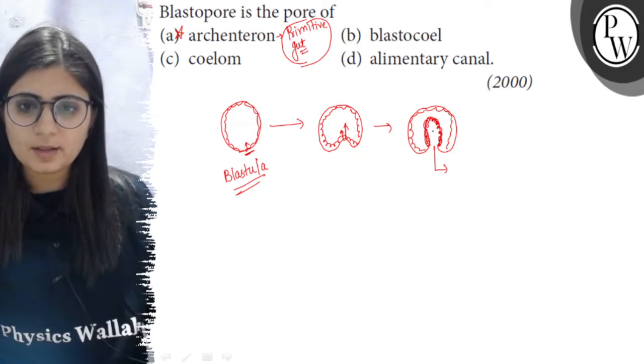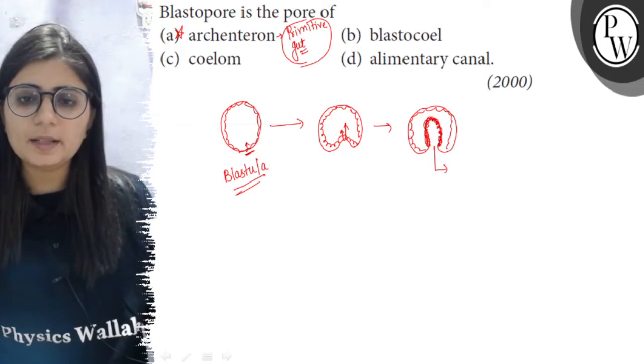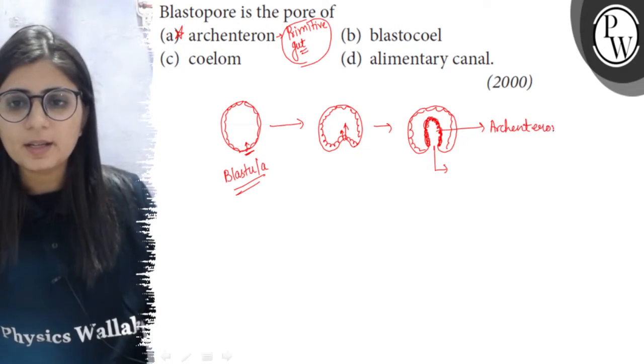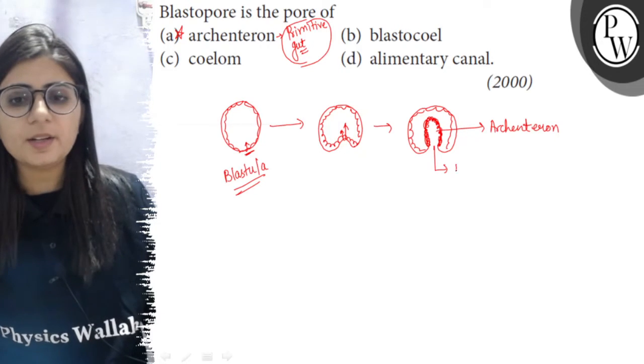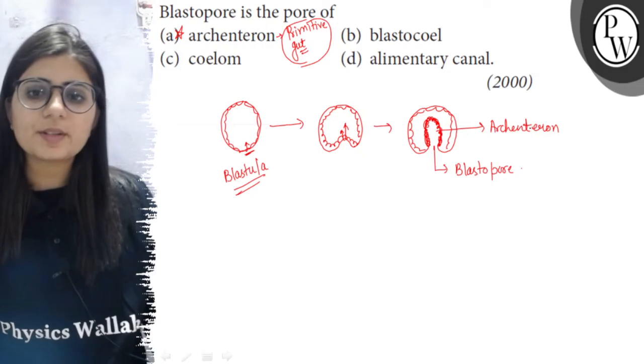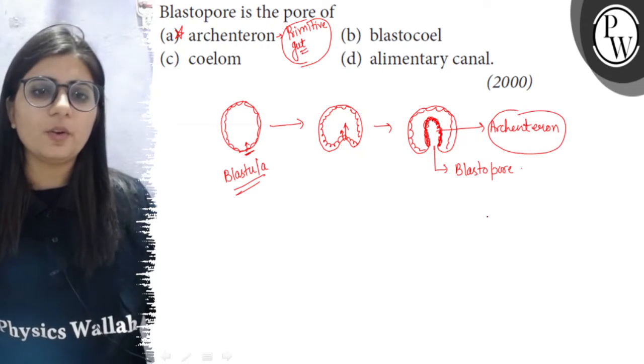This pore, this endodermal lined structure, is known as the archenterone or it is the primitive gut, and the opening of this archenterone is known as the blastopore. Blastopore is the opening of archenterone or the primitive gut.